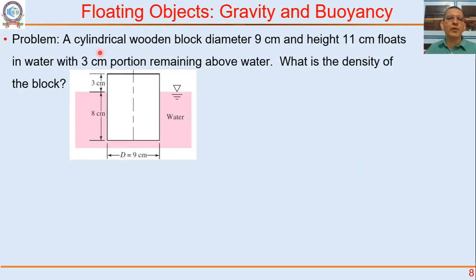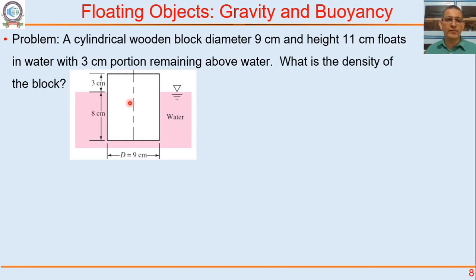Let us take a small problem. A cylindrical wooden block with diameter 9 cm and height 11 cm floats in water with 3 cm above the surface. Find the density of this wooden block. Pause the video, do this problem yourself — discuss with classmates, read books, search online — but try to solve it yourself before going forward.